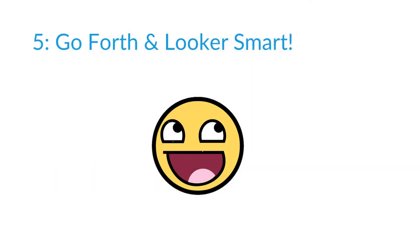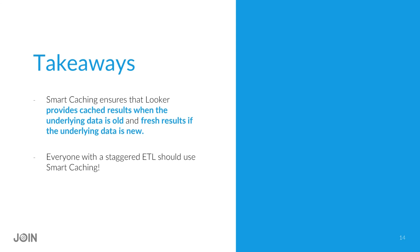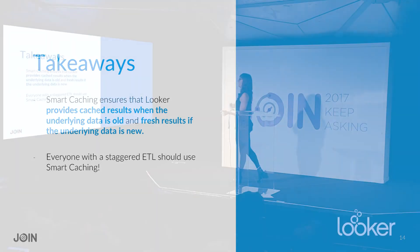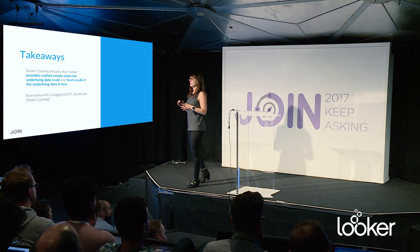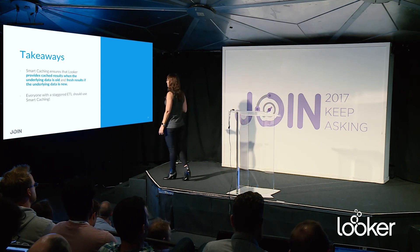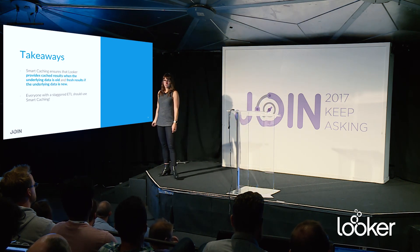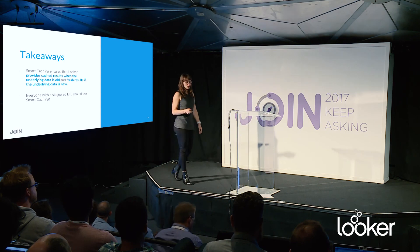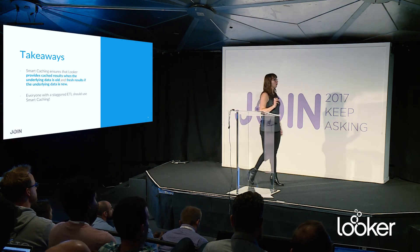So go forth and looker smart. The two takeaways are: first, the core purpose of smart caching is that it provides cached results when there's nothing new in your database, and gives you fresh results as soon as you know there is something new. It's really the best way to leverage your ETL pipeline alongside Looker to make sure your users get the best possible experience — whether that's fast loading or fresh data. The other takeaway is that pretty much everybody should be using this. There's some way for you to apply it to your particular company and business, so I'd encourage everyone to take a look.